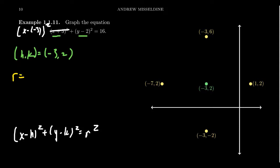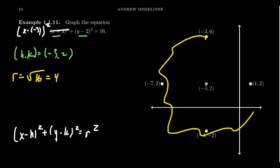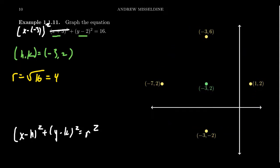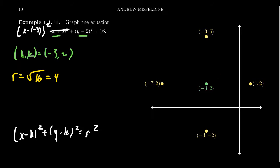To find the radius, you take the square root of the constant on the right side. The square root of 16 gives us a radius equal to four. Now that we know the radius and center, we can draw the circle. If you have a shaky hand, you can draw a cross to give you a skeleton. Since the radius is four, count four units right to get one comma two, four units up to get negative three comma six, four units left to get negative seven comma two, and four units down to get negative three comma negative two.